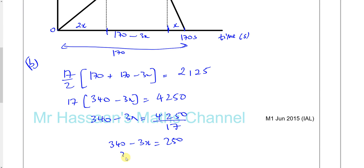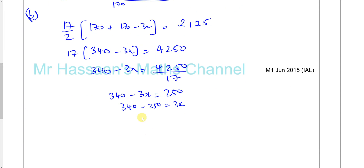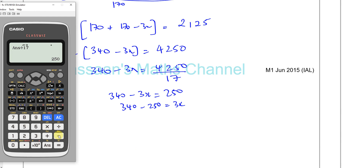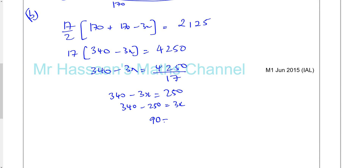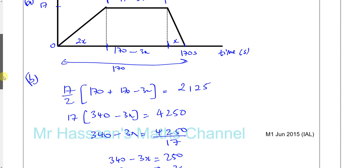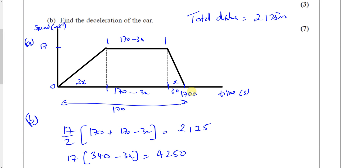So 340 minus 250 equals 3x, giving 90 equals 3x, therefore x equals 30 seconds. So x is 30 seconds, meaning the deceleration phase is 30 seconds, the acceleration phase is 60 seconds, and the constant speed section is 170 minus 90, which is 80 seconds.